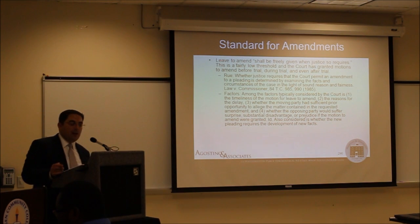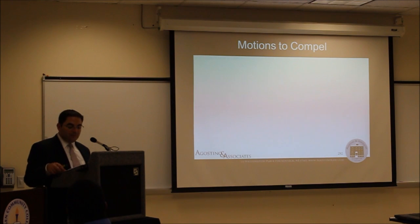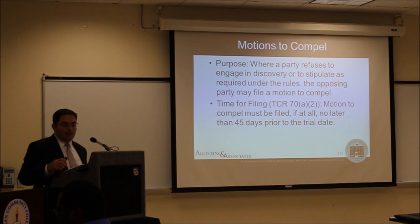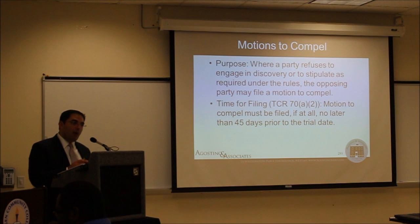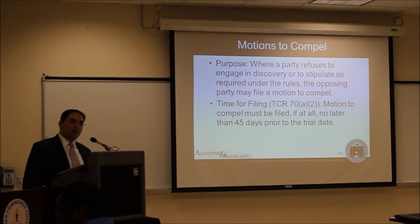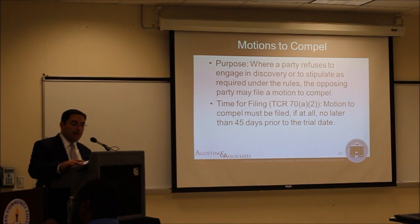Let's talk about motions with respect to discovery. Generally under Rule 70 of the Tax Court rules, the courts favor informal discovery — that's the general rule based on the Brannerton Corporation v. Commissioner case. Formal discovery is kind of an afterthought; you don't go right to formal discovery. This is novel because in every other court parties proceed to formal discovery — exchanging documents and information through formal requests. The Tax Court is very different.